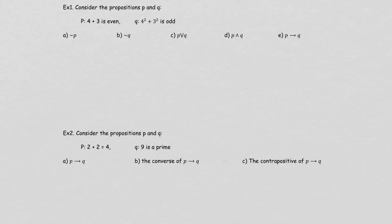Let's see if we can answer some of these questions. Statement P is '4 plus 3 is even,' and Q is '4 squared plus 3 squared is odd.' These are just any statements thrown out there — we're not saying this is going to be true, because 4 plus 3 is 7, which is not even.